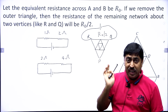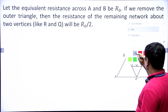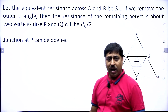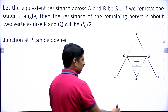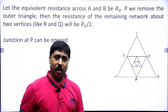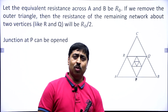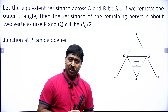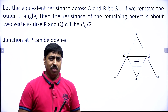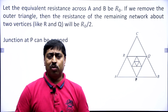That is the first key concept needed to solve this problem. The next important thing is that the junction at point P can be opened — this is another key concept. Many of you may have already done problems using this concept. In my lecture series on current electricity I have covered examples of false junction circuits where removing a junction makes no difference.